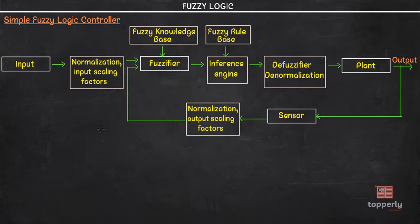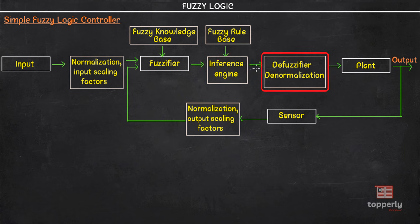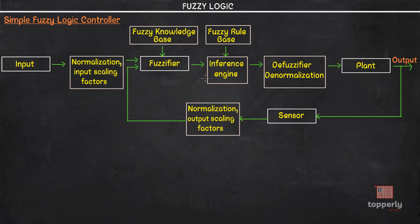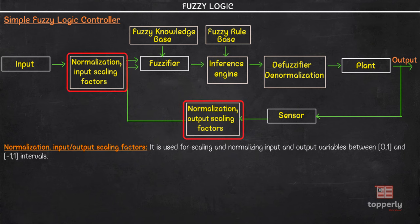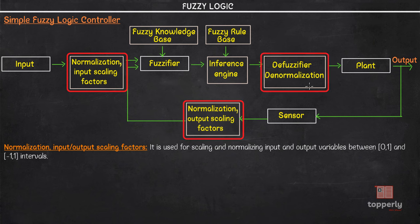Here we have a simple fuzzy logic controller. Its principal components are the fuzzifier, which does fuzzification; a fuzzy rule base; a fuzzy knowledge base; an inference engine; and a defuzzifier. There are also parameters for normalizing and denormalizing. Normalization and input scaling factors are used to scale and normalize input and output variables between the ranges zero to one and minus one to one. Once this process is complete, we denormalize and take it as output.